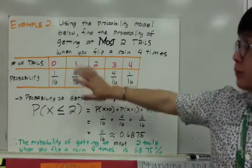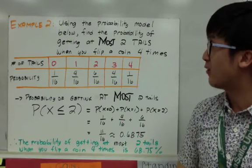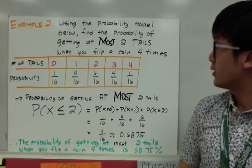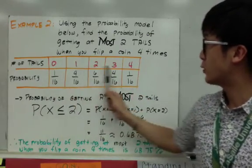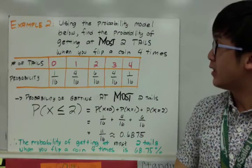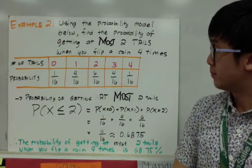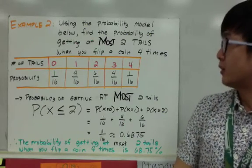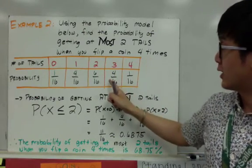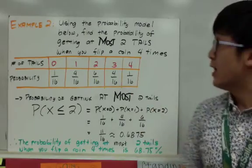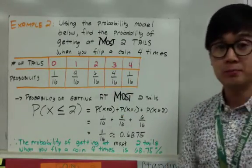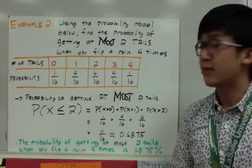By using this probability model, we can answer other questions. The probability of getting at most four tails includes 0, 1, 2, 3, and 4, so we add them all together. For at least three tails, we include X=3 and X=4, adding 4 out of 16 and 1 out of 16. This is how we use probability notation with discrete random variables to answer probability questions in this unit.